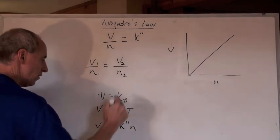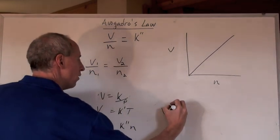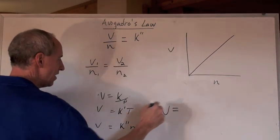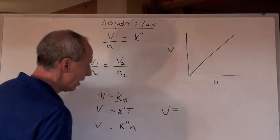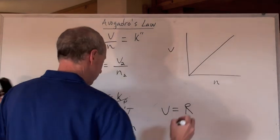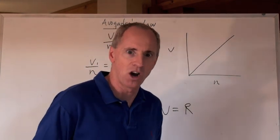And if you take all of this and you want to write one formula, V is going to equal—hey, there's K, K double prime, K triple prime. What are you going to call that? Call it R, because three K's put together is R.